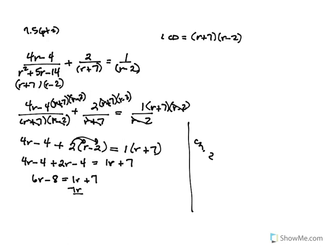I'm going to get my R terms together and my constant values together. Then I divide both sides by 5 because I want to isolate R. So R is equal to 3. And again, you can always take that 3, substitute it into the original problem, and check your solution to make sure it's correct.